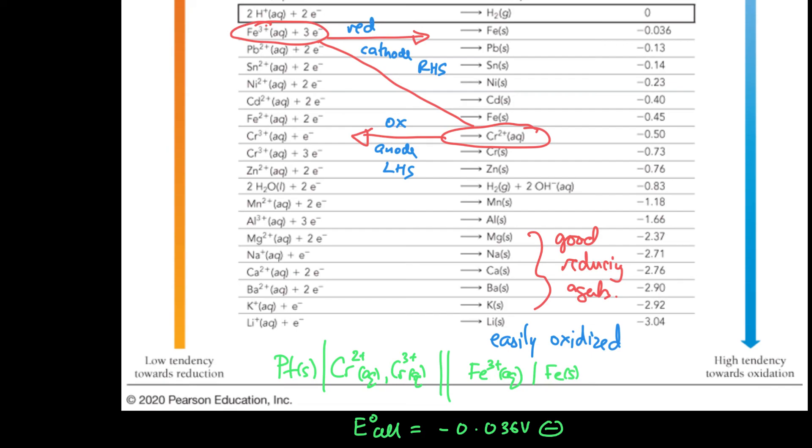And we're subtracting away from that something that's even more negative. So, of course, that double negative makes a positive. So 0.50 volts. And if we add that together, we get a positive 0.46 volts.